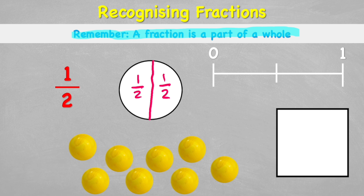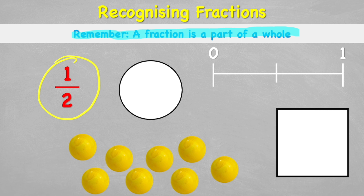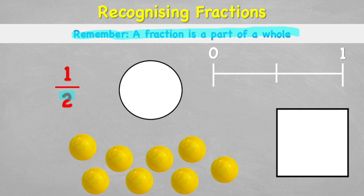Let's start by looking at half. This looks a fancy way of showing a fraction, doesn't it — with a one on the top and two on the bottom. The number on the bottom we call the denominator, and what that tells us is how many parts our whole has been cut into.